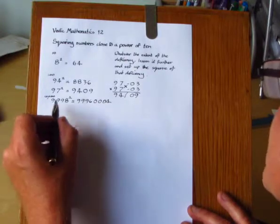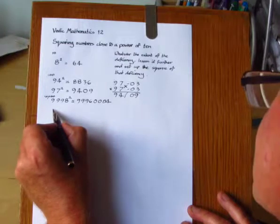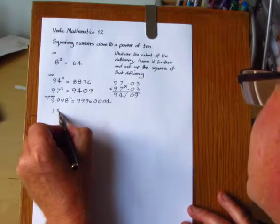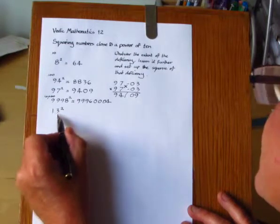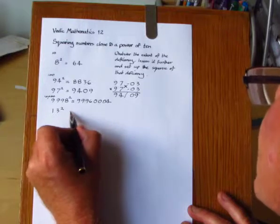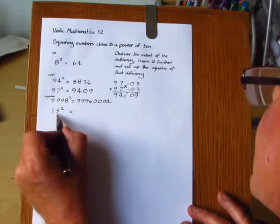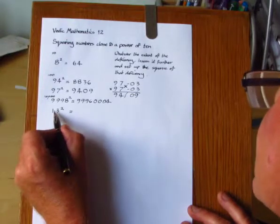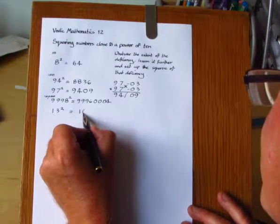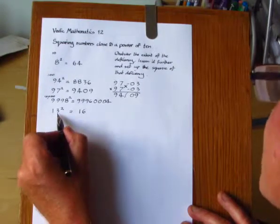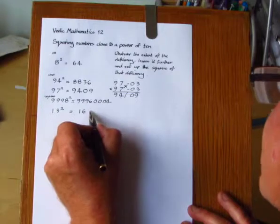Now when it comes to numbers which are above the base, like 13 squared, this time we're using a surplus. So instead of subtracting, we add. So we take the surplus 3 and add it on, making 16. And then put down the square of the surplus, 9.